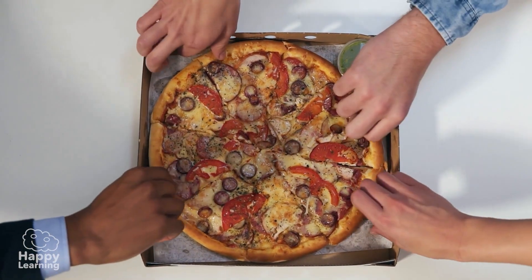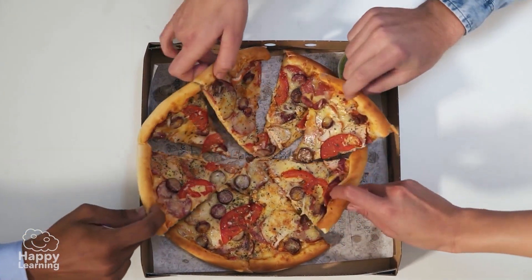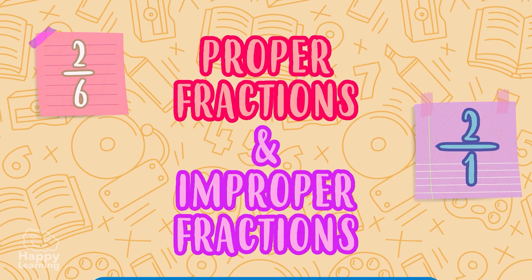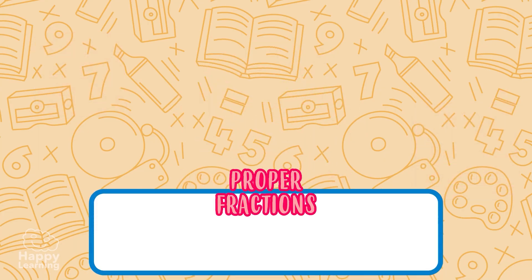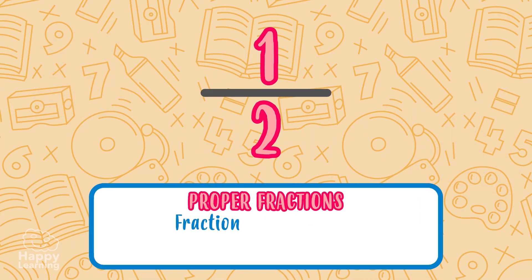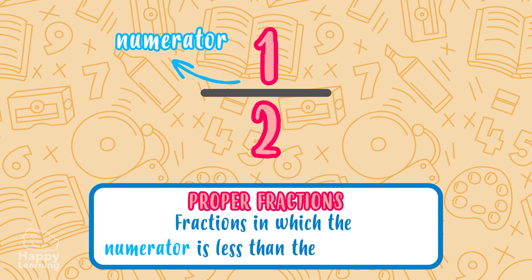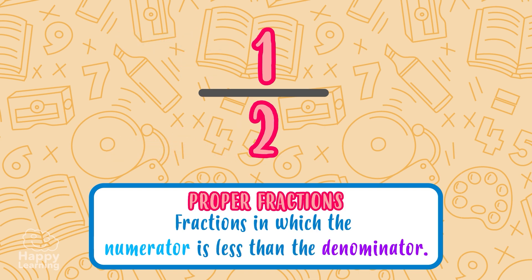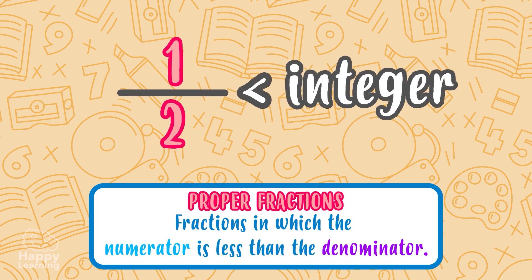Let's go back to proper fractions and improper fractions. Proper fractions are those fractions in which the numerator is less than the denominator, so they are less than an integer. Let's look at an example to understand things better.